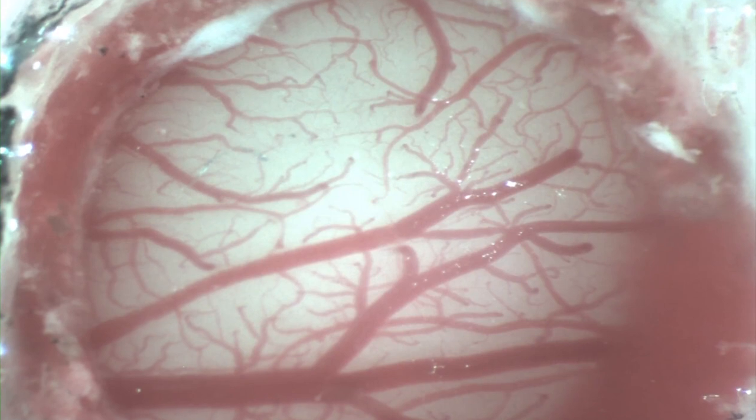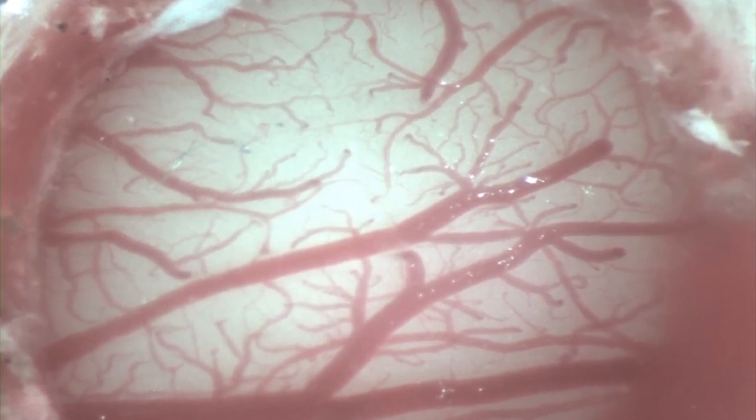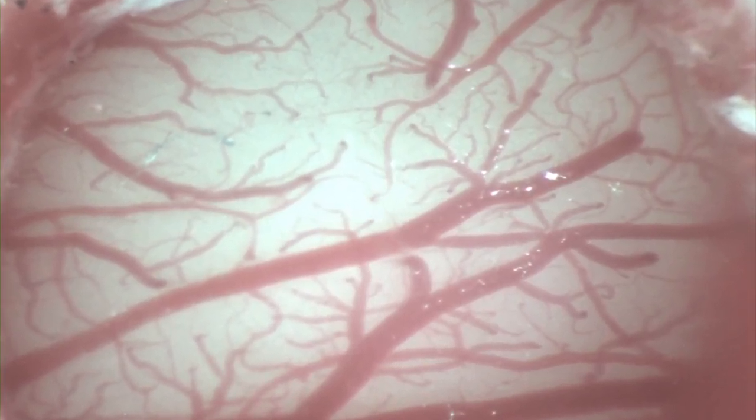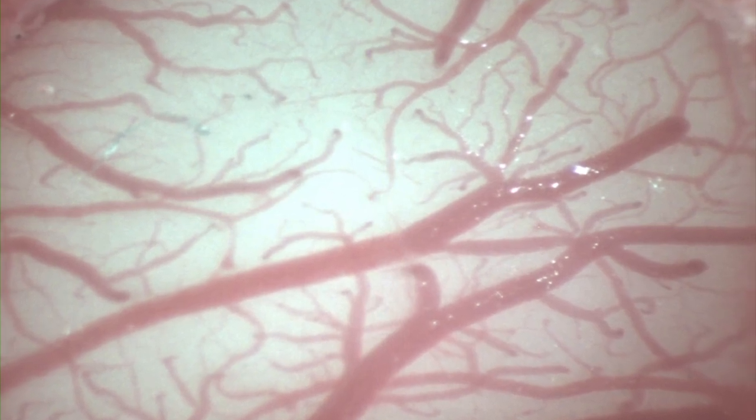So now we have what we need. We have an animal model for small strokes. We can pick a blood vessel when and where we want. We can cause it to clot. And we can look at the physiological impact of that clot on the brain.